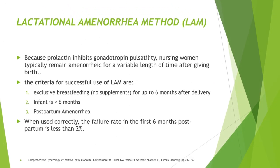Fertility awareness-based methods include the LAM, or lactational amenorrhea method. The basis of this method is that prolactin inhibits gonadotropin pulsatility. In nursing women, prolactin is high — called physiologic hyperprolactinemia — so these women typically remain amenorrheic for a variable length of time after giving birth. The criteria for successful use of LAM are: the woman should be exclusively breastfeeding with no supplements for up to 6 months after delivery; the infant should be less than 6 months old; and the woman should be amenorrheic. Lactational amenorrhea has a failure rate of less than 2% when used correctly.